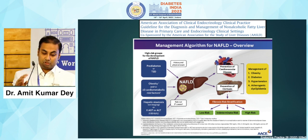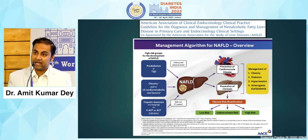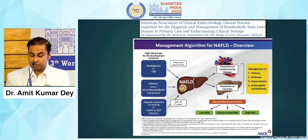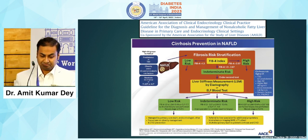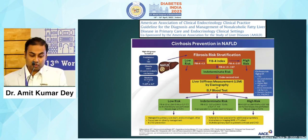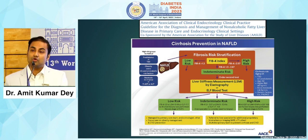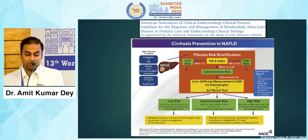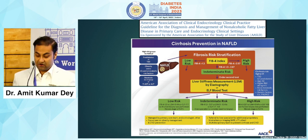This is the ACE guideline for the management of NAFLD, which is similar to what has already been discussed. You stratify fibrosis risk as low, intermediate, or high risk. Based on the FIB-4 scoring, the patient can be guided on follow-up and management. Low-risk patients can be managed by metabolic physicians, but those with intermediate or high risk — who have a higher possibility of progression into fibrosis — would probably require referral to a hepatologist.